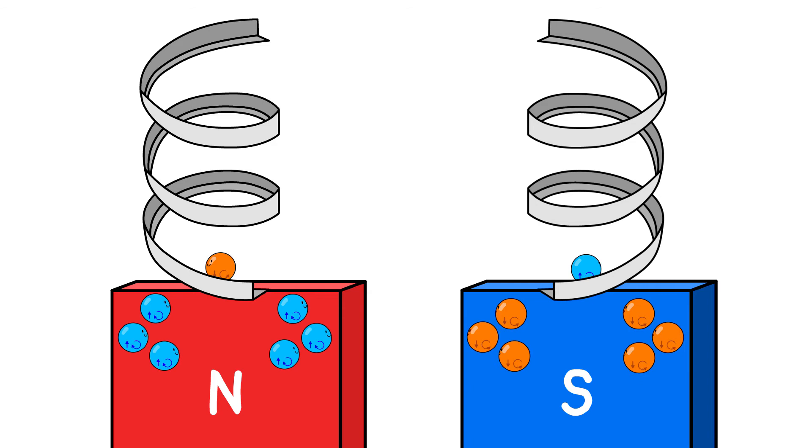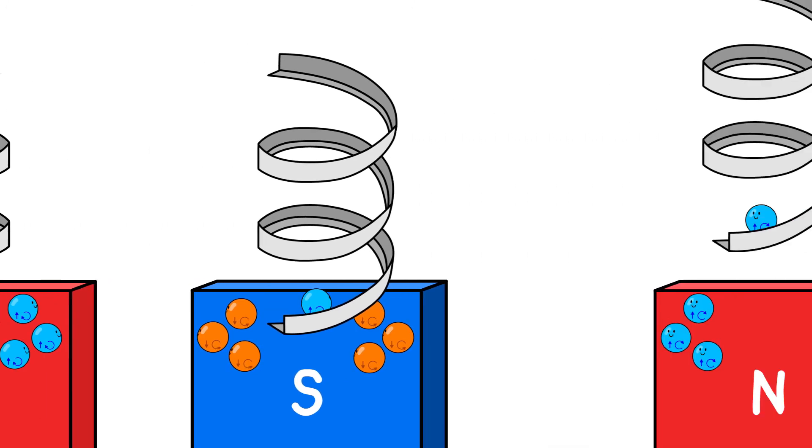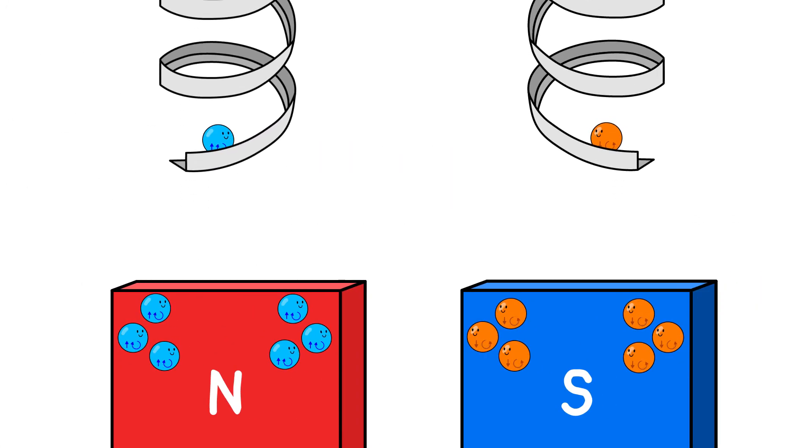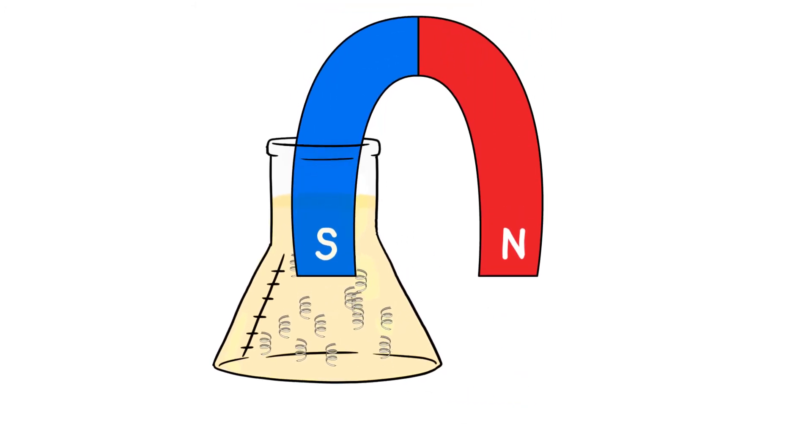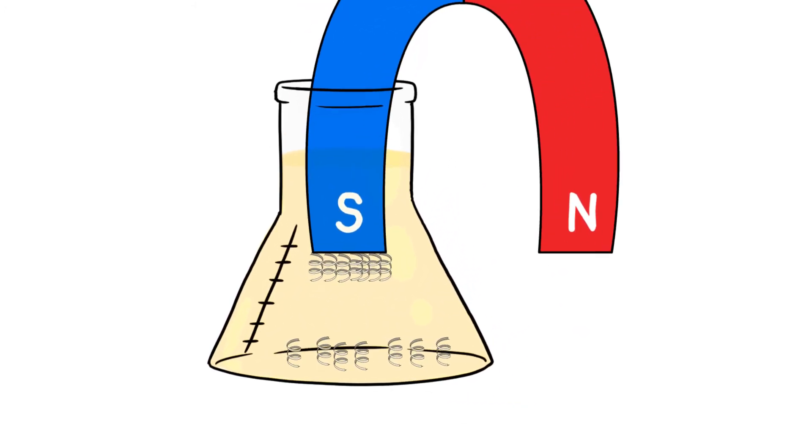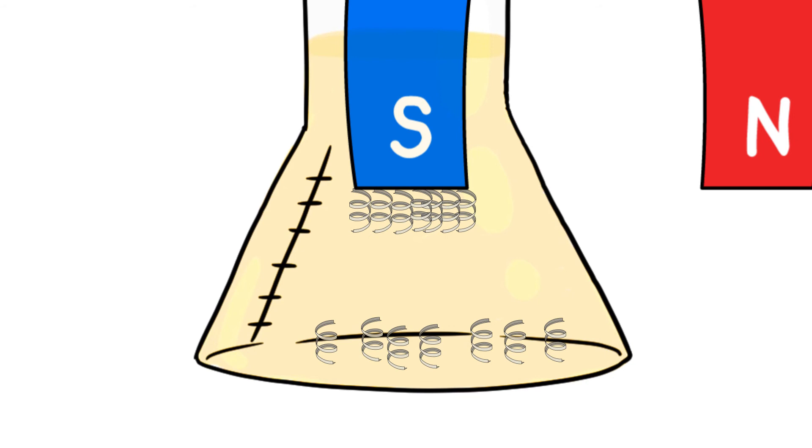If the spins are opposite, they can occupy the same volume and therefore the molecule and the surface attract each other. If they are the same, they would repel each other. Hence, if a solution contains both enantiomers of a given chiral molecule, it is possible to separate the enantiomers by magnetic surface that attracts one and repels the other.